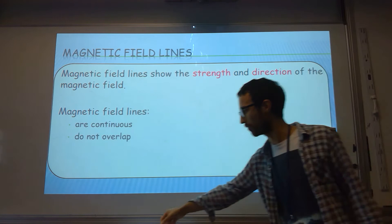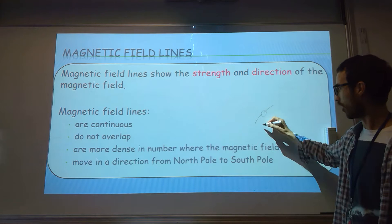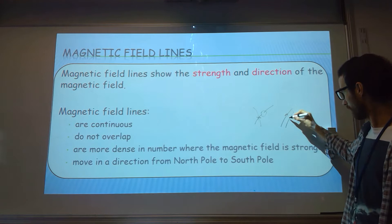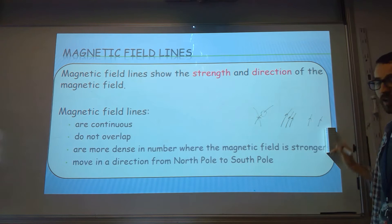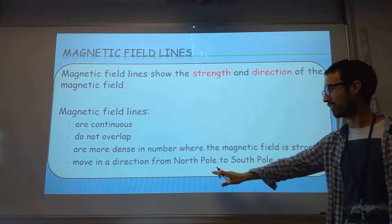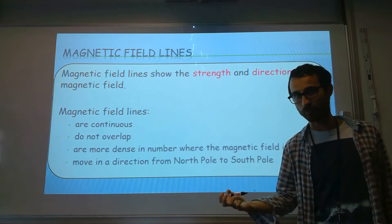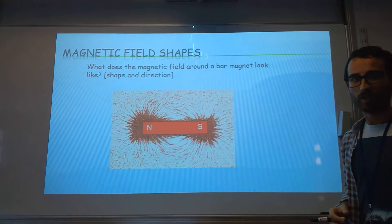So magnetic field lines show you the strength and direction of the magnetic field, and there's a few rules that you've got to stick to. One, they're continuous - that means you don't just start and stop. Two, they do not overlap. Three, where the magnetic field is strongest, they are closest together. So that would be stronger than something like that. They tell you how strong the field is at that region, and their direction is from north to south.